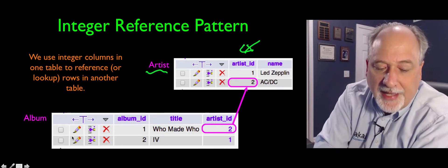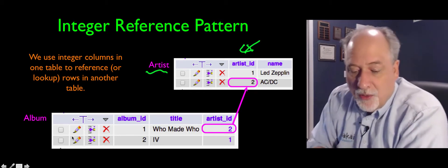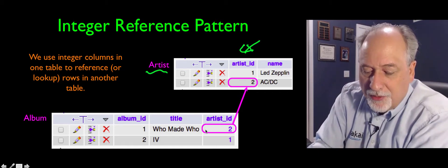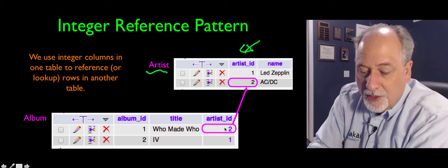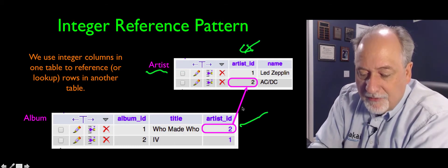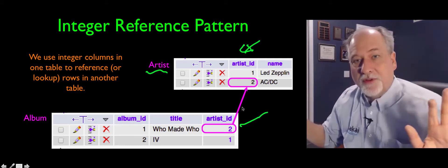So when we're in a table, say like album, where we want to say, who does this album belong to? And we want to say, this album belongs to artist ID two. So that's effectively the proxy for ACDC all over this database.